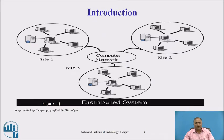This is a diagram of a distributed system where site one is one kind of network, site two is another kind of network, and site three is a third kind of network. All the networks are interconnected to each other by using a communication network, and any resource can be shared by different computers from any location. Every computer can share the resources.